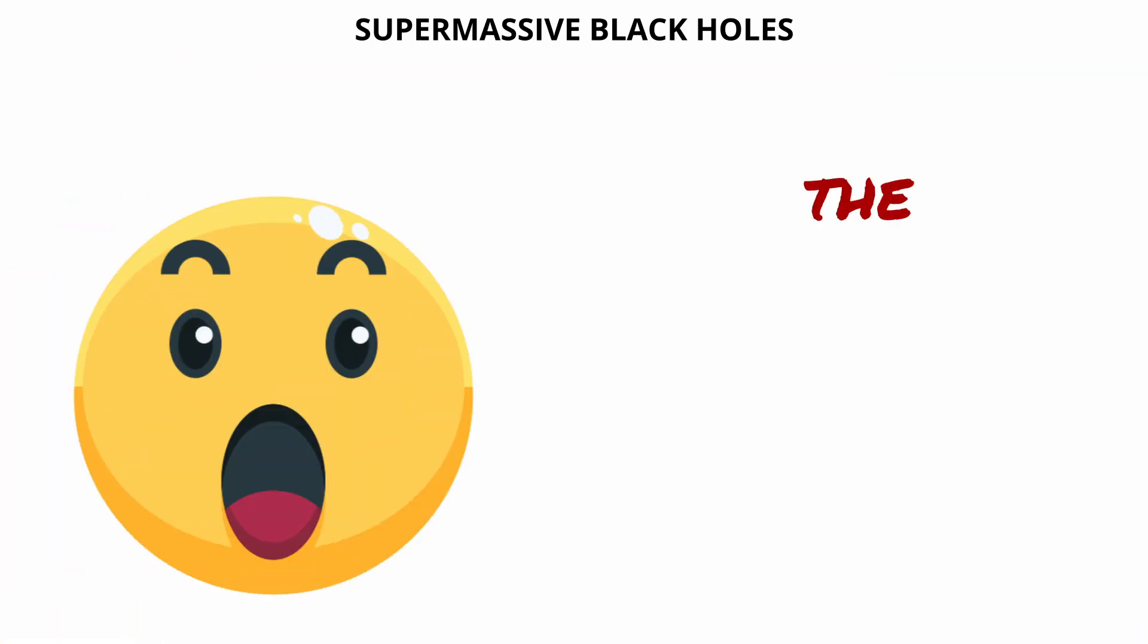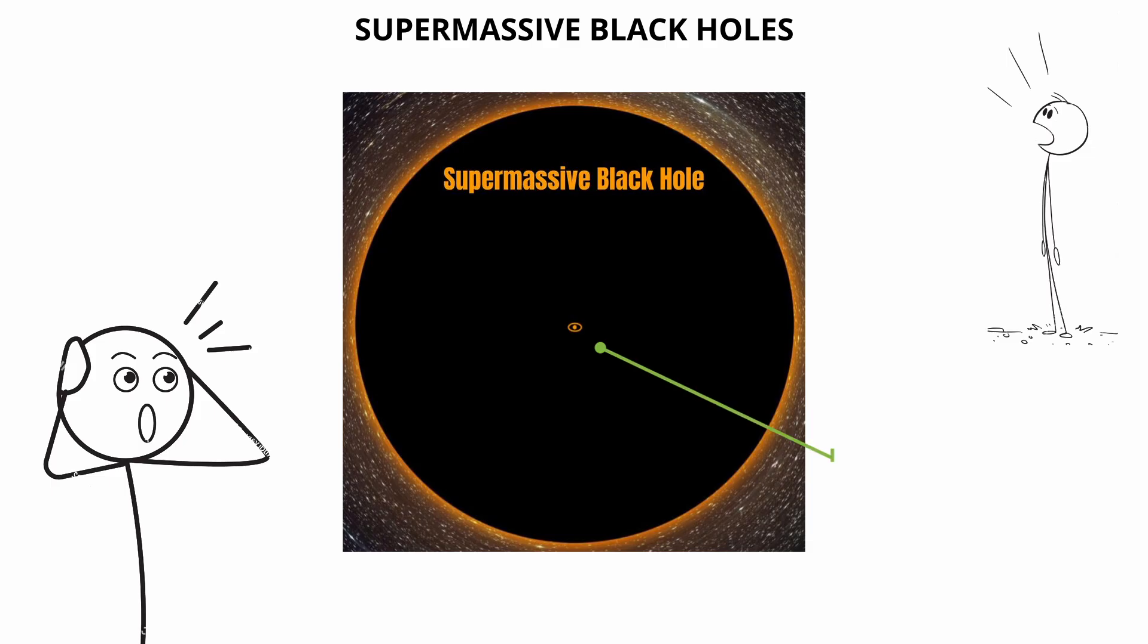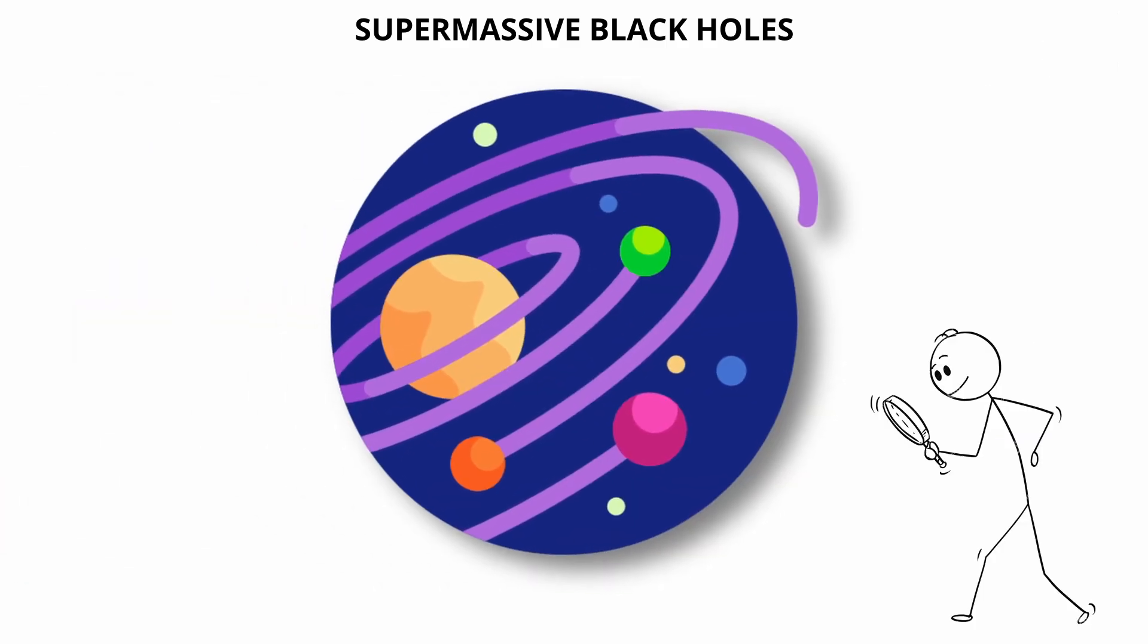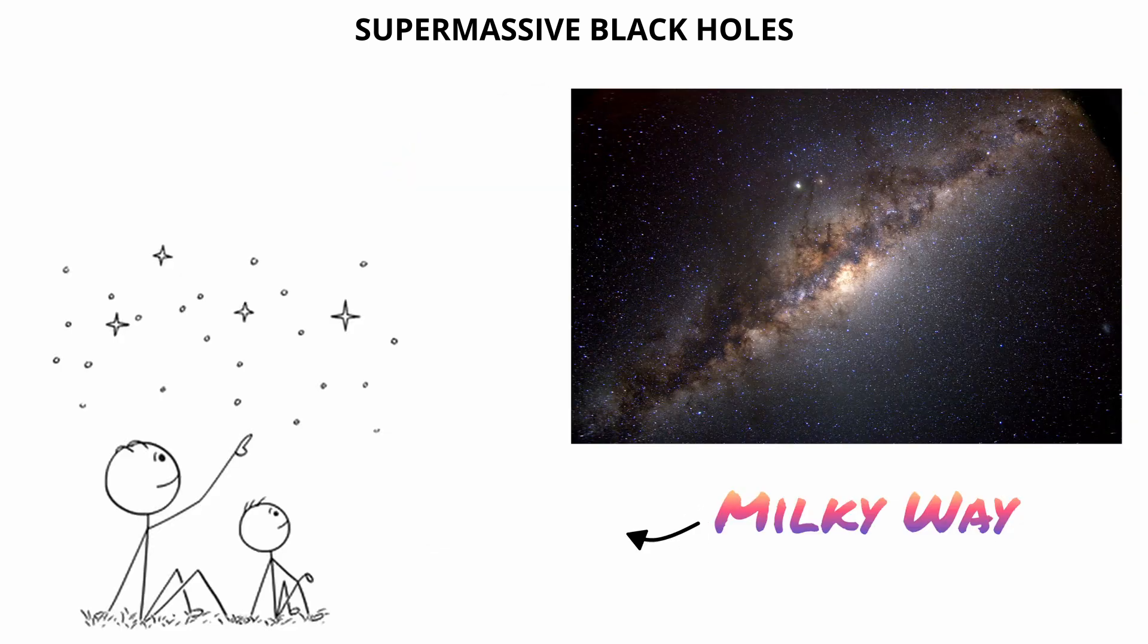Supermassive black holes. Supermassive black holes are the largest known type of black hole, with masses ranging from millions to billions of times that of the sun. They are found at the centers of most large galaxies, including our own Milky Way.